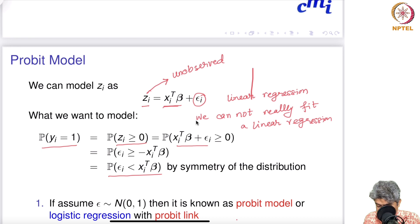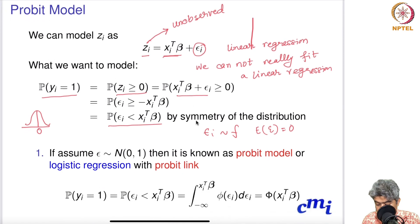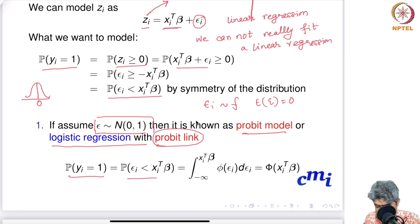εi is a residual with some distribution F and expectation zero — a bell-shaped distribution with mean at 0. If you assume εi ~ Normal(0, 1), then the model is known as the probit model, or logistic regression with probit link.